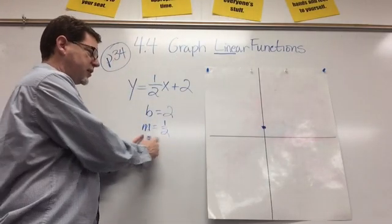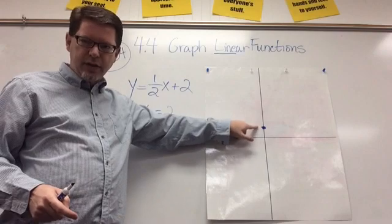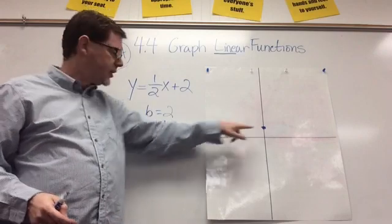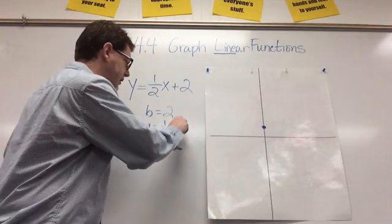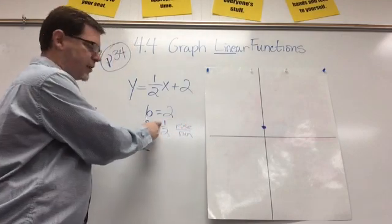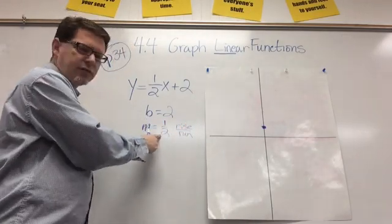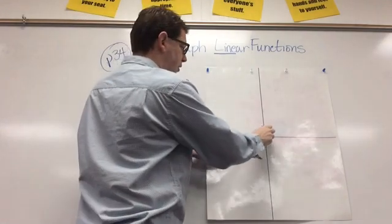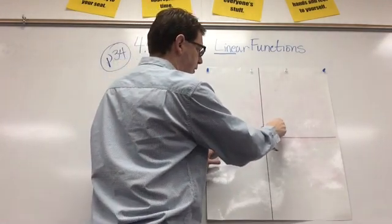And then I take my slope. And from this point that I've already graphed on my graph, I'm going to rise and run. Well, this tells me I need to rise 1 and run to the right 2. So, I'm going to go here up 1 to the right 2, and there's my next point.